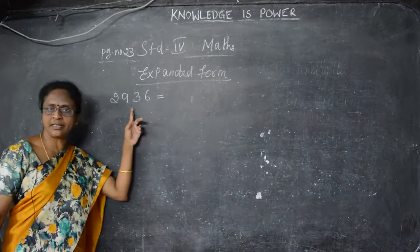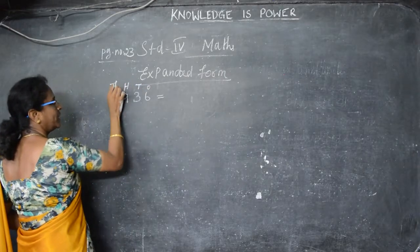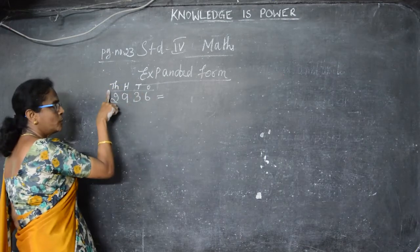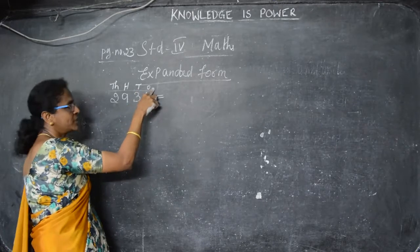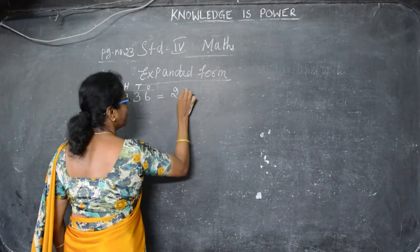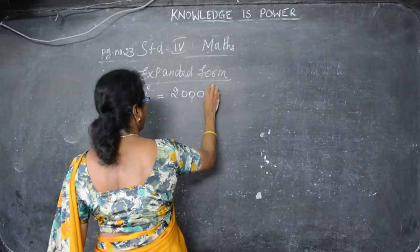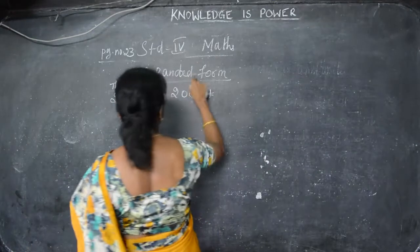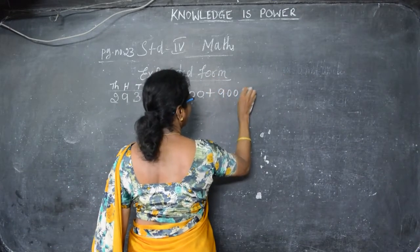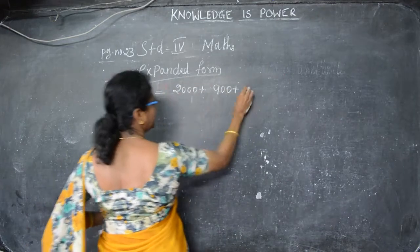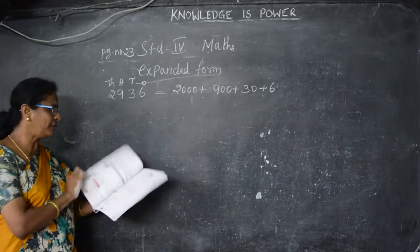2,936. As I already told you: 1, 10, 100, 1000. So 2 is in the thousands place — 2,000. 9 is in the hundreds place — 900. 3 is in the tens place — 30. And 6 is in the ones place — 6. So this is the expanded form: 2,000 + 900 + 30 + 6.